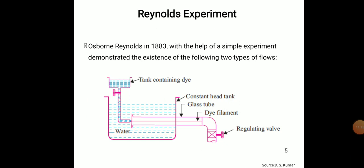Now the Reynolds experiment. In 1883, Osborne Reynolds, with the help of a simple experiment, demonstrated the existence of two types of flow: laminar and turbulent. He applied his principles and came to conclusions, categorizing these two flows — laminar and turbulent.